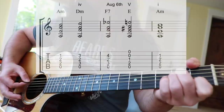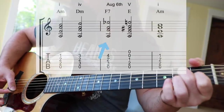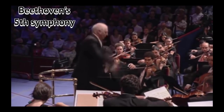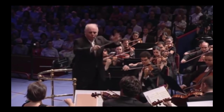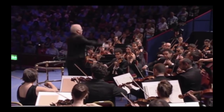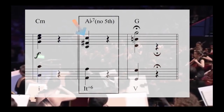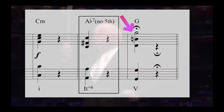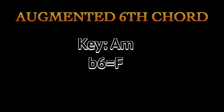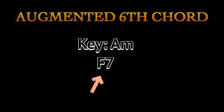The augmented sixth chord is a perfect way to rep that classical vibe. Here's an augmented sixth chord from Beethoven's Fifth Symphony. The augmented sixth chord is a dominant seventh chord built on the minor sixth scale degree of the key. For example, in the key of A minor, the minor sixth scale degree is F. Form an F7 on that note, and you've played an augmented sixth chord.